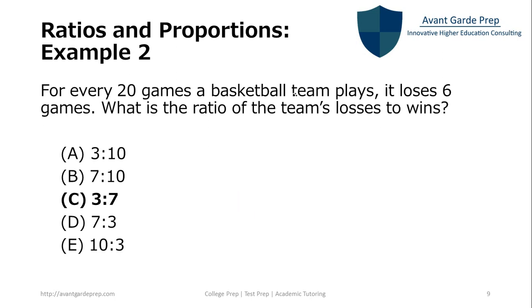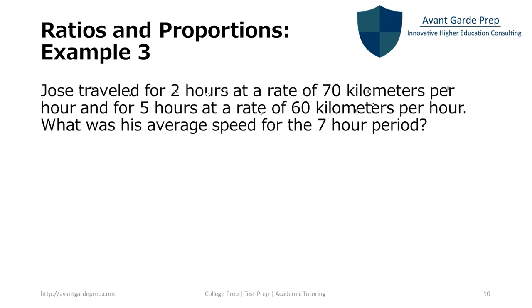Let's take a look at example problem three. Here, Jose traveled for two hours at a rate of seventy kilometers per hour. And for five hours at a rate of sixty kilometers per hour. What was his average speed for the seven hour period? Now this is one of those problems where we use the rate, time, and distance. Here, I want you guys to take a minute, work through this problem, and we'll cover it in class.